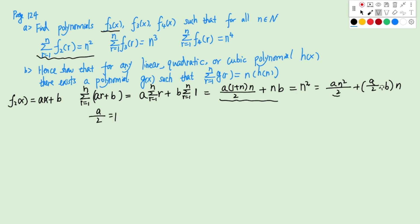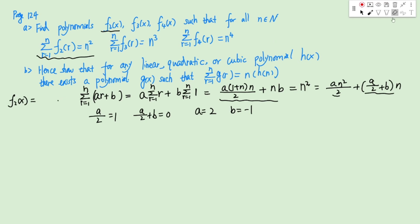Expanding gives (A/2)N squared plus (A/2 plus B)N. Since this holds for all N, the coefficients must match. So A/2 equals 1 giving A equals 2, and the linear term must be 0 giving B equals negative 1. So our first polynomial is F2(x) equals 2x minus 1.